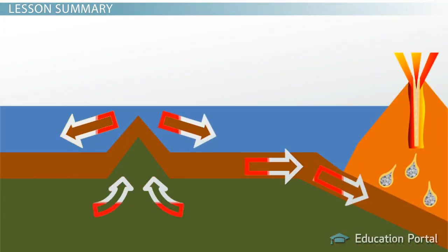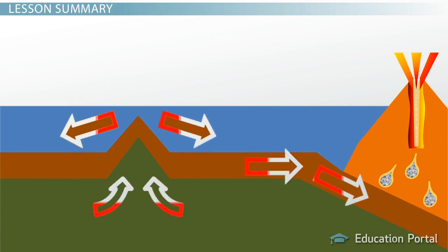This theory has been supported since then by the advance of technologies that allow scientists to actually measure the movement of the plates in centimeters per year. Plate tectonics is the current accepted theory that describes how the face of the earth can change over time.